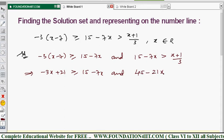So 3 into 15, that is 45 minus 21x greater than x plus 1 is remaining. Same x belongs to real numbers throughout the question. And take all the x terms on one side.